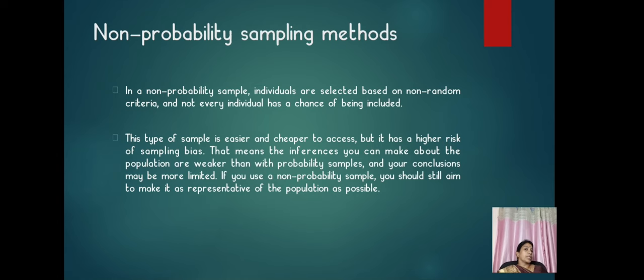Next, non-probability sampling method. In non-probability sample, individuals are selected based on non-random criteria and not every individual has a chance of being included. When compared to probability sampling, this non-probability sampling is easier and cheaper to access, but it has a higher risk of sampling bias.